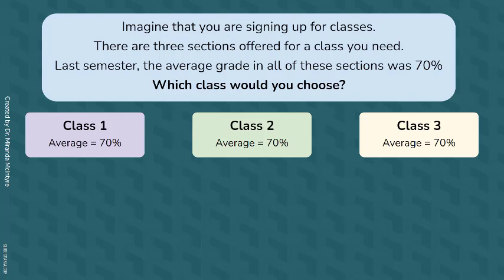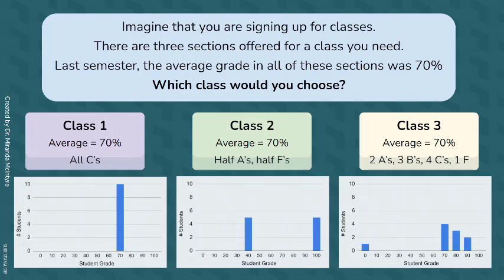What if you found out that the distributions in these classes looked very different? Again, the average grade in these sections is all the same. Does the distribution affect which one you might choose?